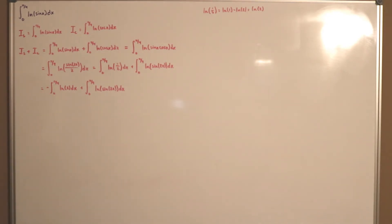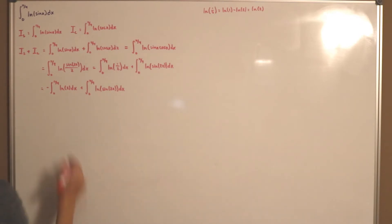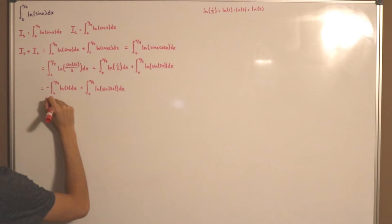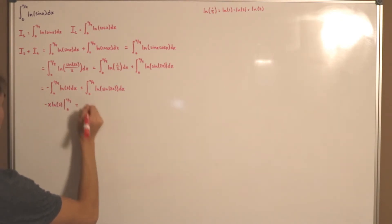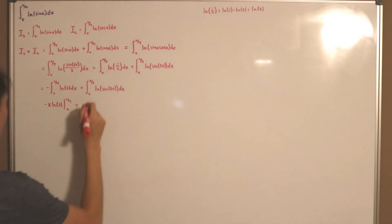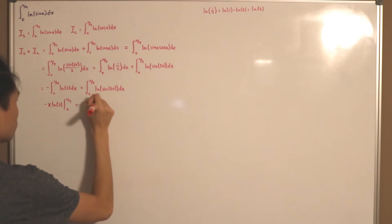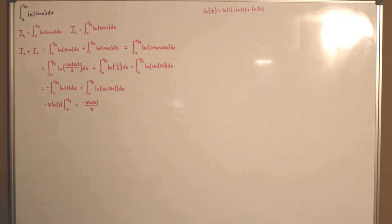This is just a simple integration: ln(2) is a constant, so when you integrate it with respect to x, we get negative x·ln(2), evaluated from 0 to π/4. That comes simply to negative π·ln(2)/4, since evaluating at 0 gives zero.